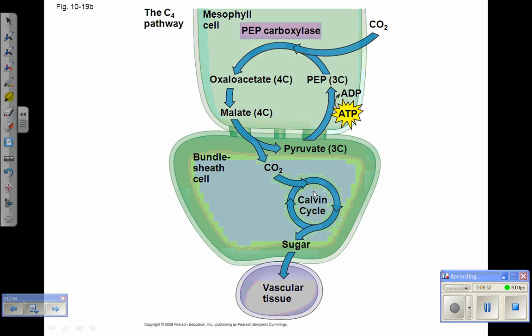The continual influx of the four carbon compound into the cell keeps the concentration of CO2 high in the bundle sheath cells. The CO2 then enters the Calvin cycle, is attached to RUBP by rubisco, and the Calvin cycle proceeds normally producing glyceraldehyde 3-phosphate or sugar, which can then be transformed into either starch or into sucrose and sent into the vascular tissue.